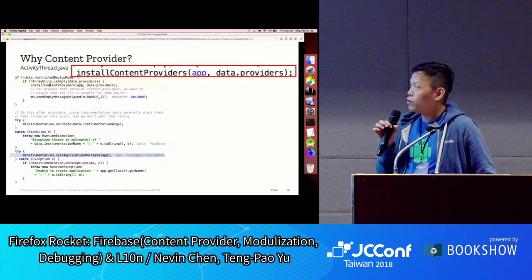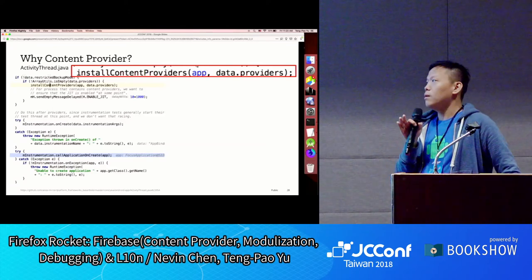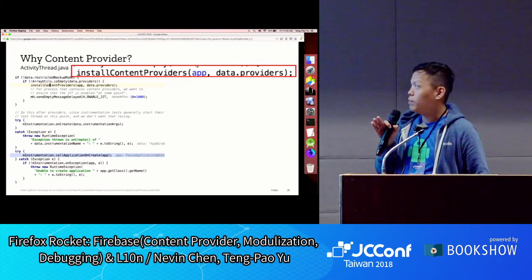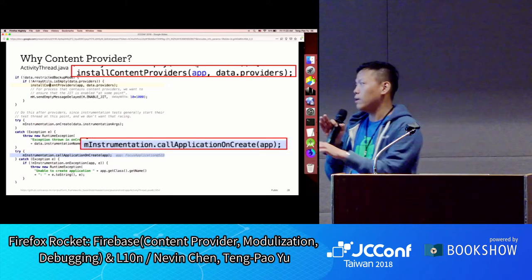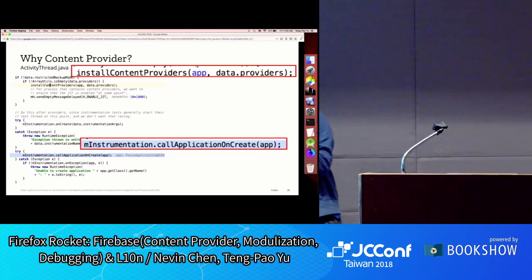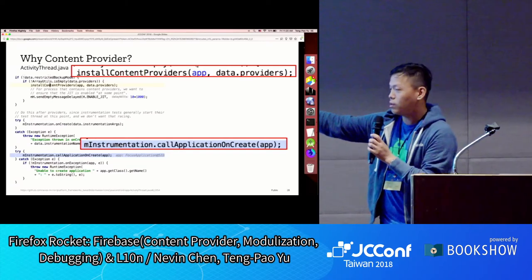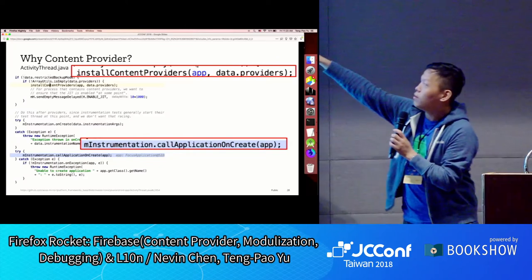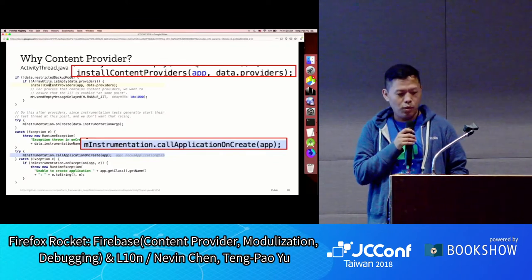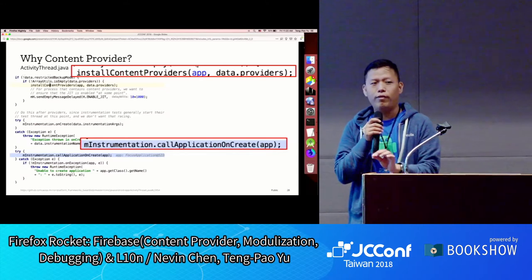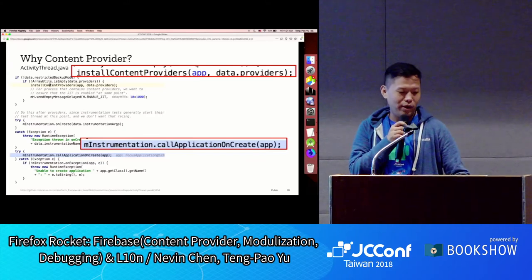Looking at ActivityThread.java: when the Android system launches your app, it installs content providers first, then calls Instrumentation.callApplicationOnCreate — where the app passed in is the Application class initialized by Android. In that call it invokes Application.onCreate, but before that, in the installContentProvider call, it calls ContentProvider.onCreate. So all content providers start before your Activity — that's where Firebase injects its secret initialization calls.